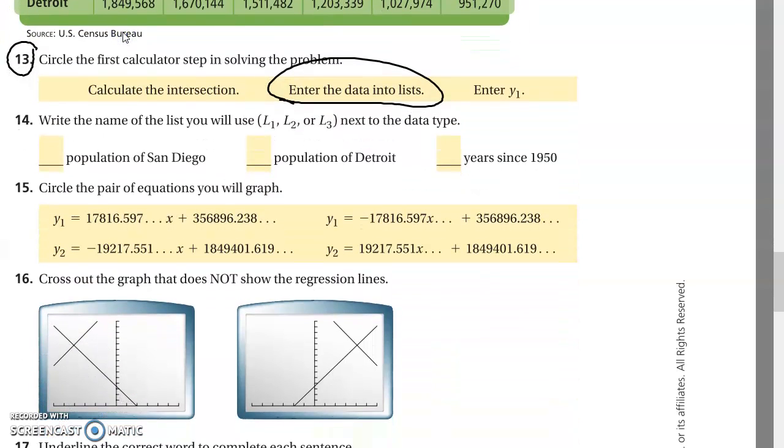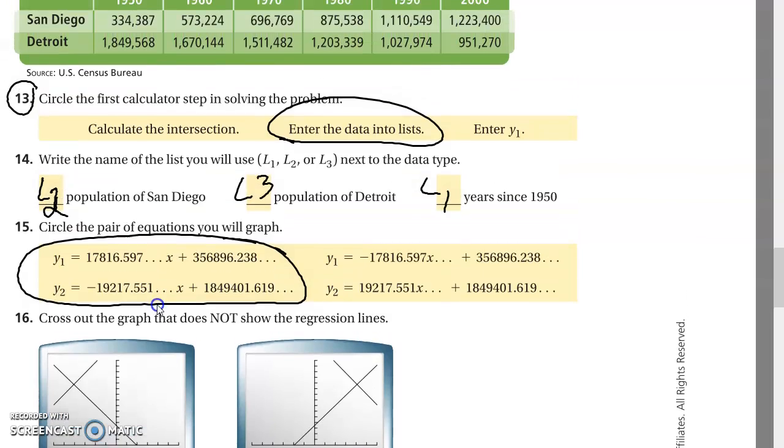Okay, number 14. Write the name of the list you will use. So this is L1. You can make up anything for this if you did it. Or L2, I'm sorry. This is L3. And since 51, it is going to be L1. Circle the pair of equations you will graph. And we're going to do these two right here.